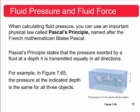Okay, so when calculating fluid pressure, you can use an important physical law called Pascal's Principle, named after the mathematician. So Pascal's Principle states that the pressure exerted by a fluid at a depth H is transmitted equally in all directions. Okay, so for example, you take these objects here. There's three of them, they're the same object, but they're positioned differently in the water. If you look at the arrow pointing at the object, it's hitting the object in the same place. So the pressure is being, the pressure here is the same coming at the point here as it is here as it is here. Okay, so the position of it doesn't necessarily change the pressure. The pressure is still constant in all directions. Or not constant, it's transmitted equally in all directions. Excuse me.